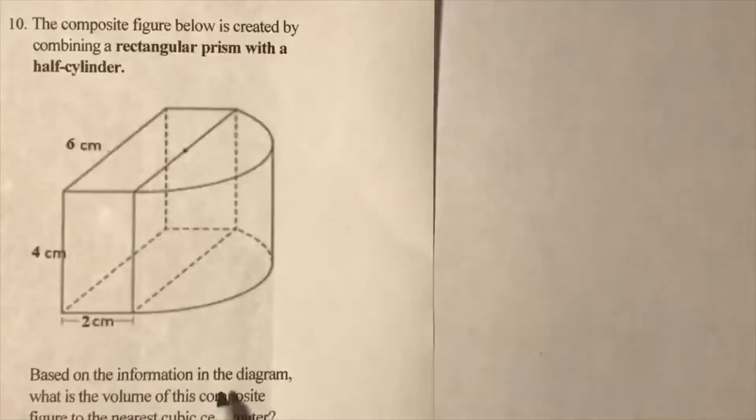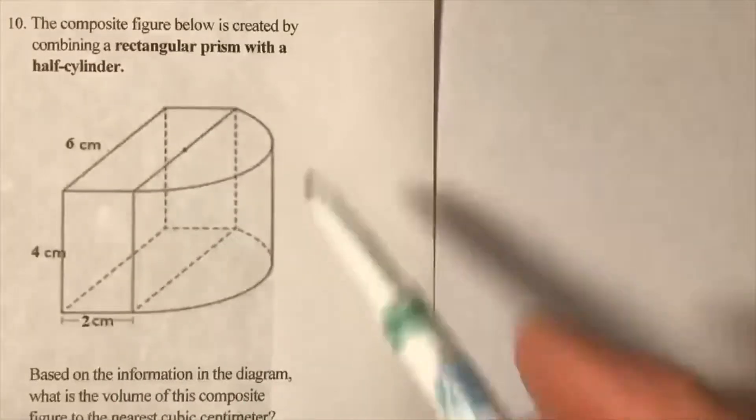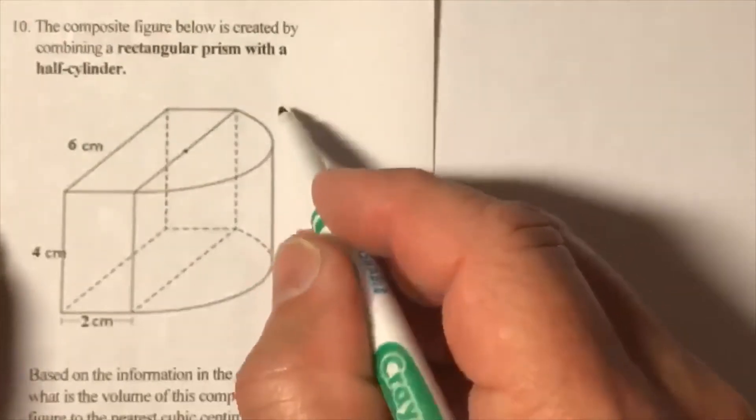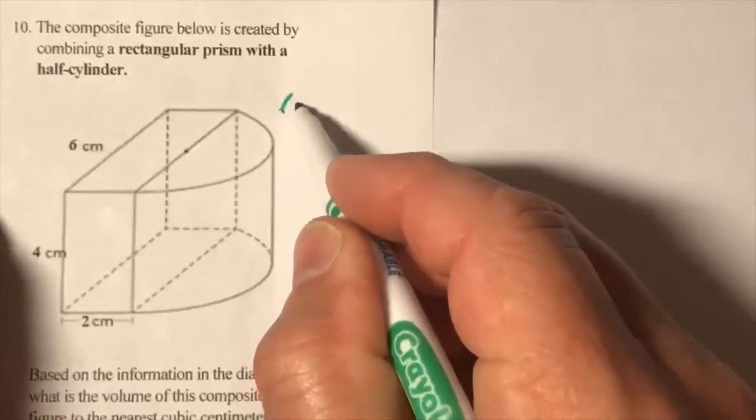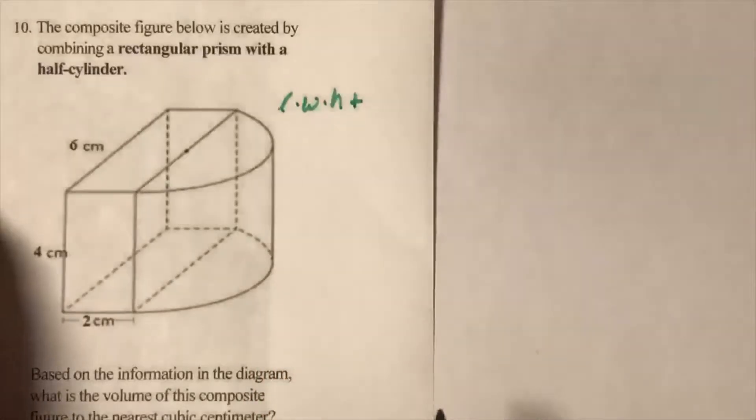Alright, so based on the information in the diagram, what is the volume of the composite? The volume is a rectangular prism, which is length times width times height, plus a half cylinder.